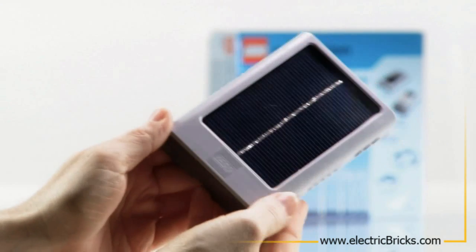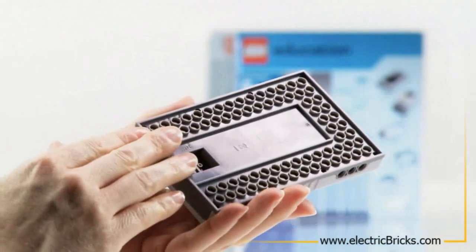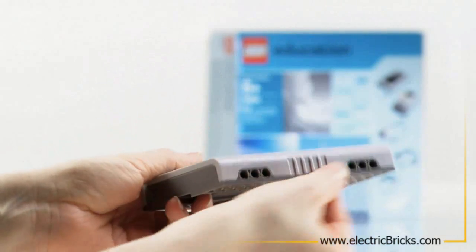The solar panel can be built into the models using the knob configuration underneath and the Technic holes on the sides.